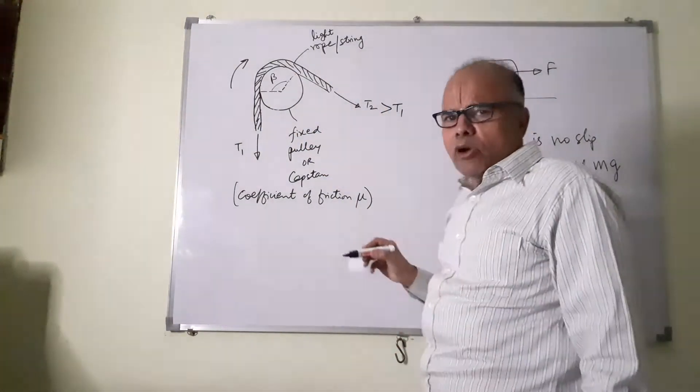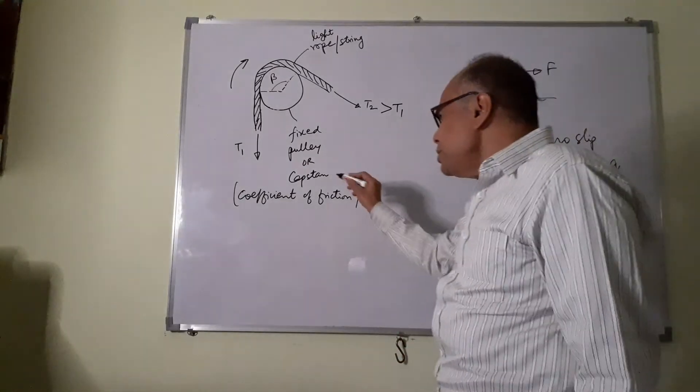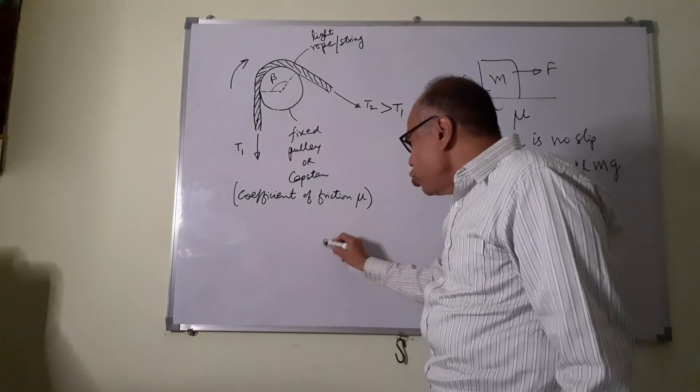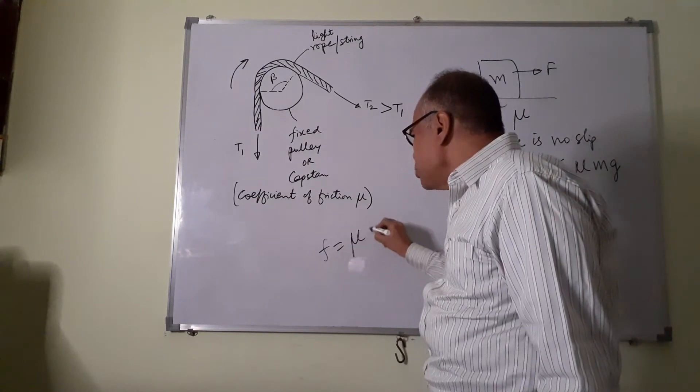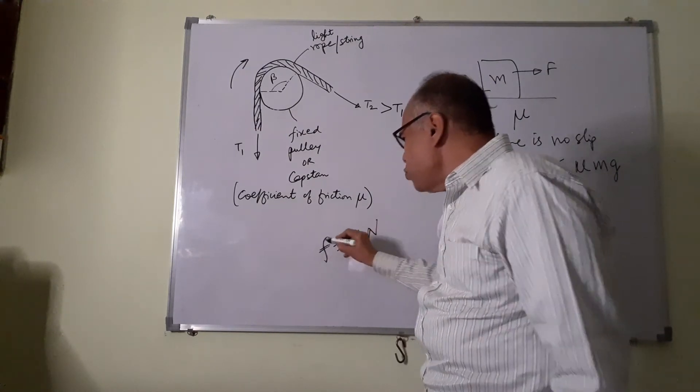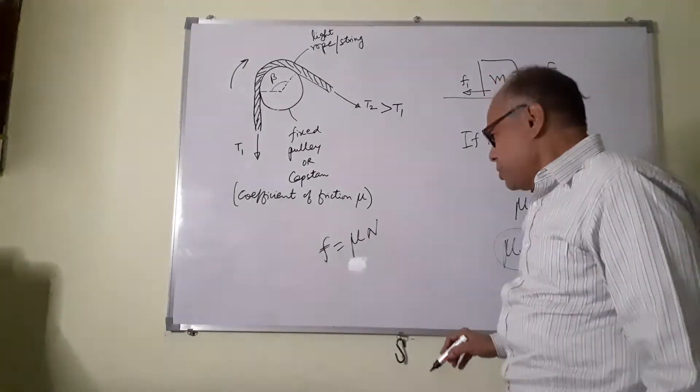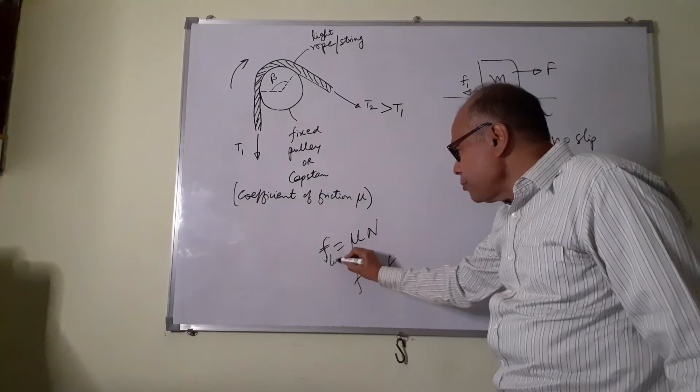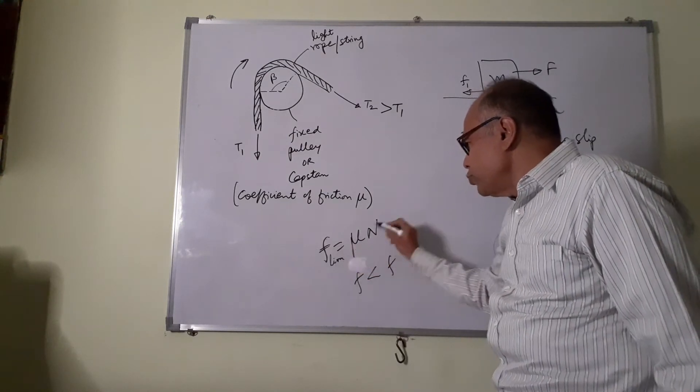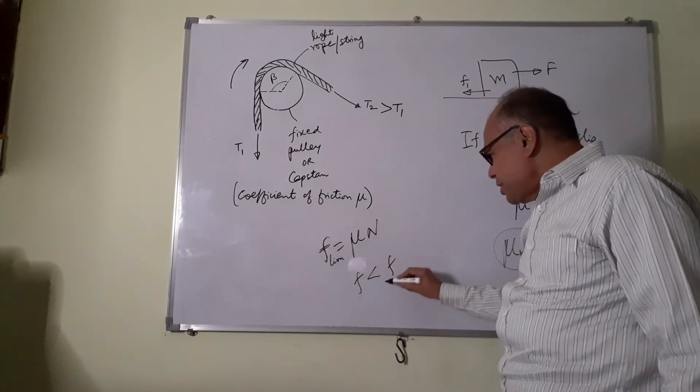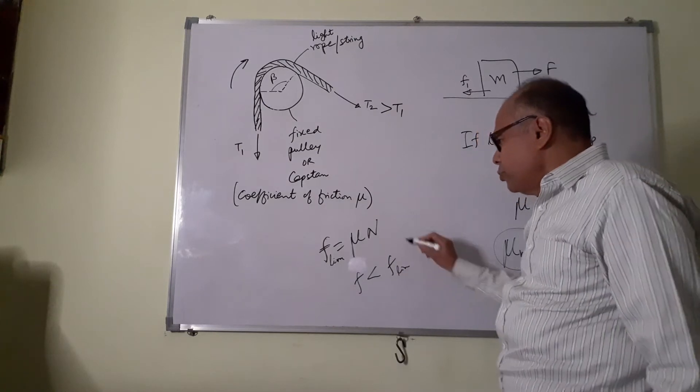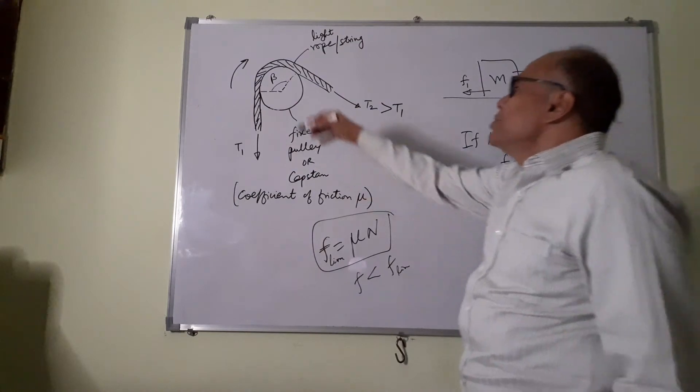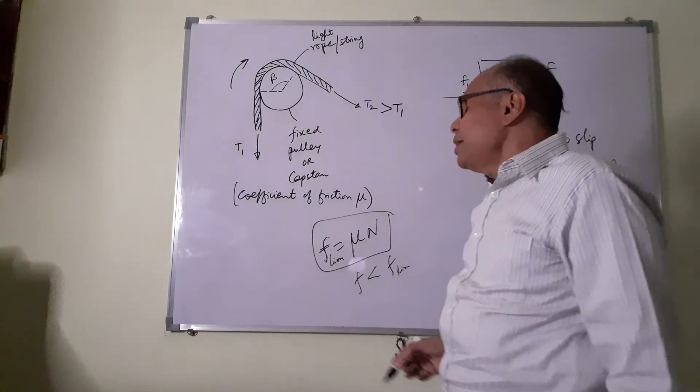Why this point is important is because in the derivation relating these two tensions, we are going to say F equal to mu N. We can say this only if there is a slip. Otherwise you cannot say it. Otherwise F will be less than the limiting value. F limiting equal to mu N. We are going to use this. So we have just proved that this string will necessarily slip.